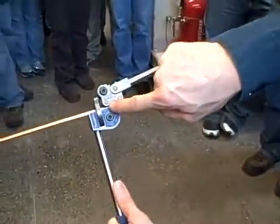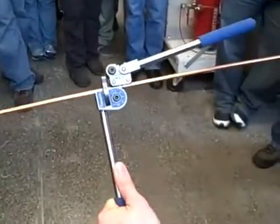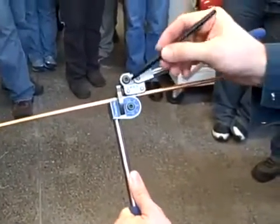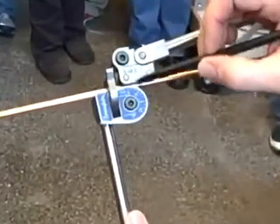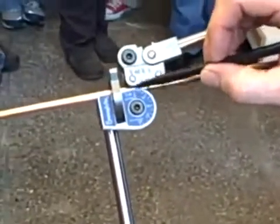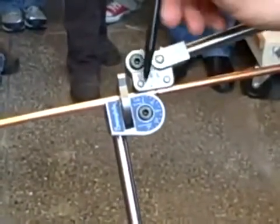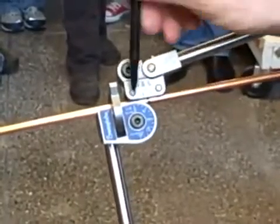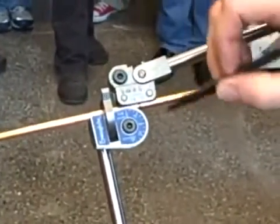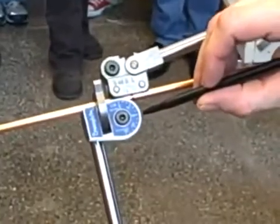There's a mark on this portion of the bender right here. I'll use a pen to point it out. There's a mark right here called zero, and there's a mark right here called zero. You want to start with those two lined up. Then, since I want to make a 90-degree bend, I'm going to roll this around until that zero mark lines up with that 90-degree mark right there.